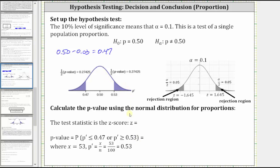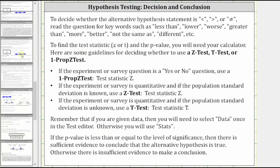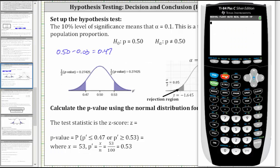And now let's go to the calculator, determine the z-score and the P value. And because we have a proportion, we will be performing a one-prop z-test. To do this, press stat, right arrow to test, select option five for a one-prop z-test.